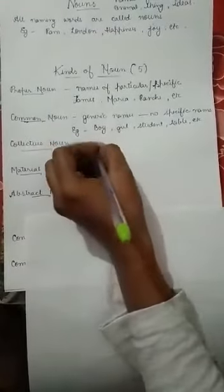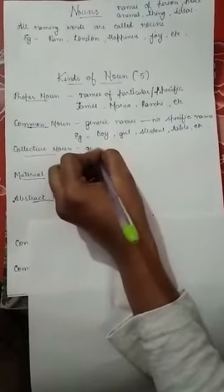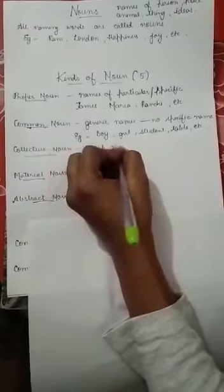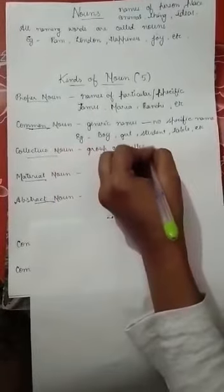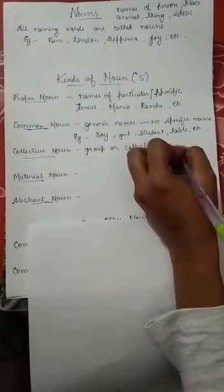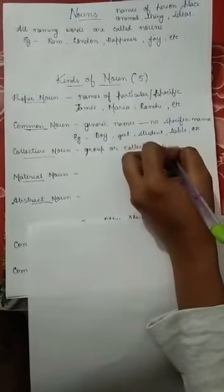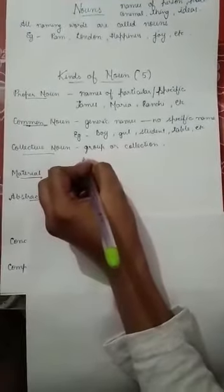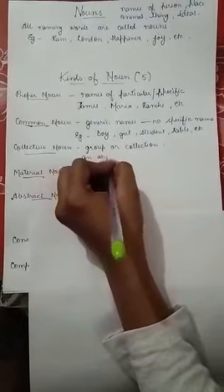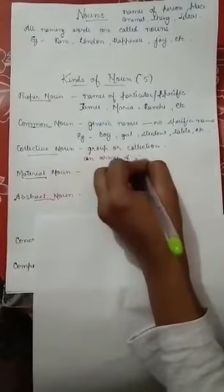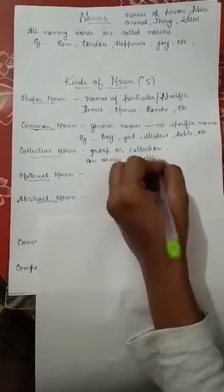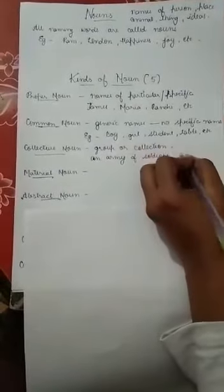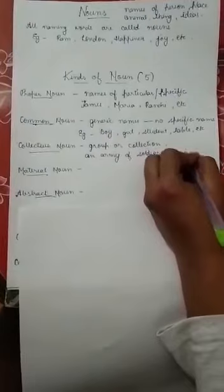Moving on to the third one: collective noun. It is a group or collection of a person, place, animal, or thing. For example, what do we call a group of soldiers? It is called an army of soldiers. What is a group of cards called? A pack of cards.